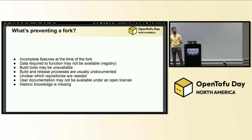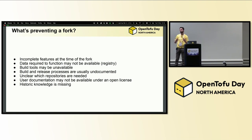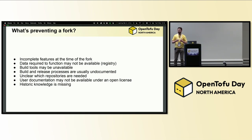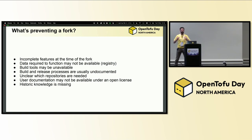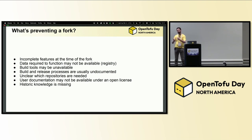Build tools might be unavailable or just undocumented. We had to build a whole new release pipeline and integrate that with all of our existing tooling. It's unclear what repositories should be forked — how do you know where the barrier is between what you're working on and upstream projects owned by HashiCorp? HCL is the language that both OpenTofu and Terraform are built on. How do we fix bugs in it or add features when it's owned by HashiCorp? Do we have to fork that as well? We ask ourselves that every day.